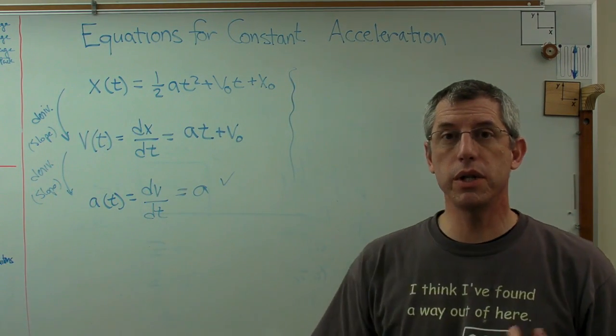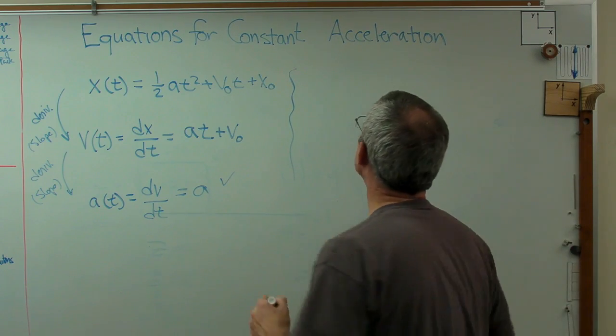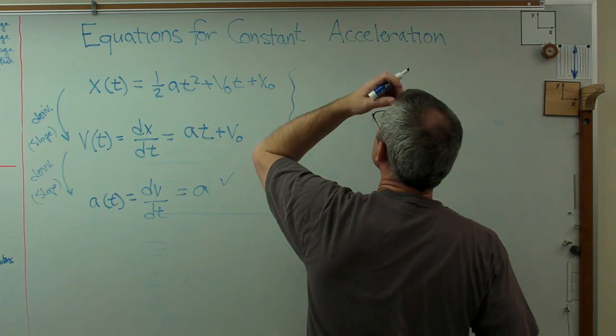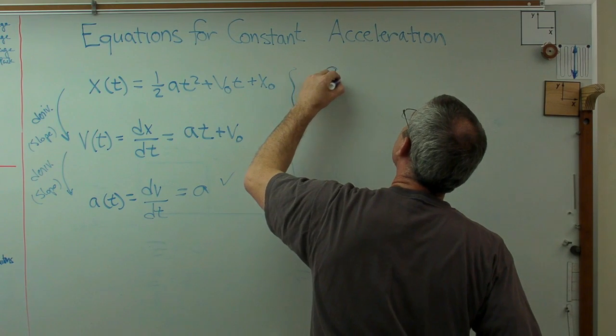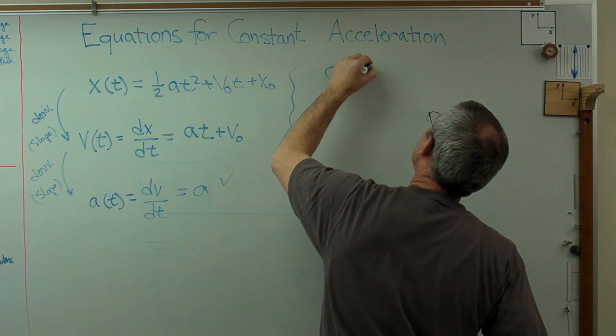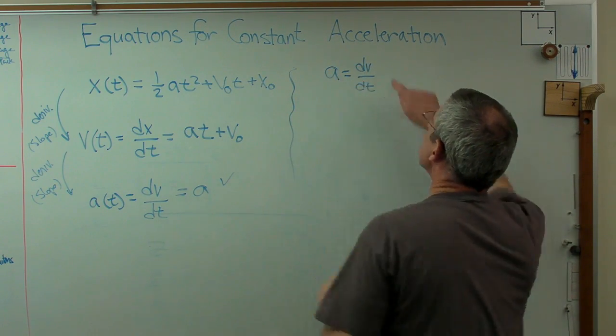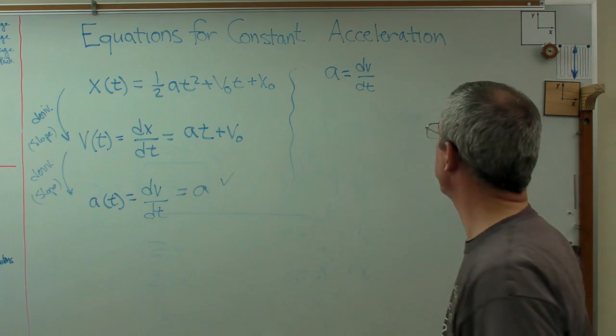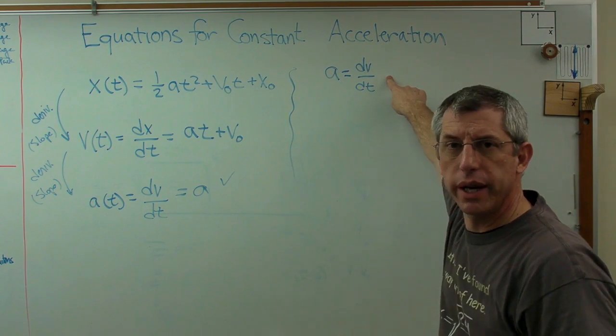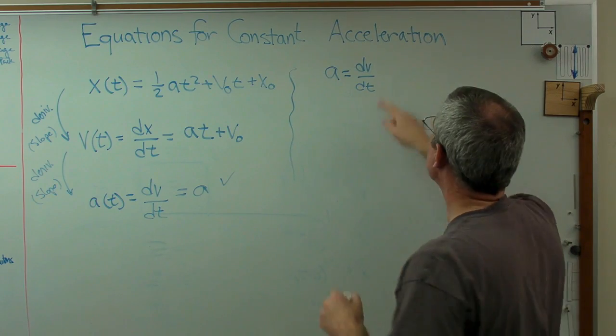Another way to do it is the exact opposite. Rather than finding slopes, we'll find areas. Let's do this. Let's start with acceleration. Acceleration is dv/dt, just like we had before. It's the slope of velocity is acceleration. Well that sure looks like the beginnings of a calculus problem.